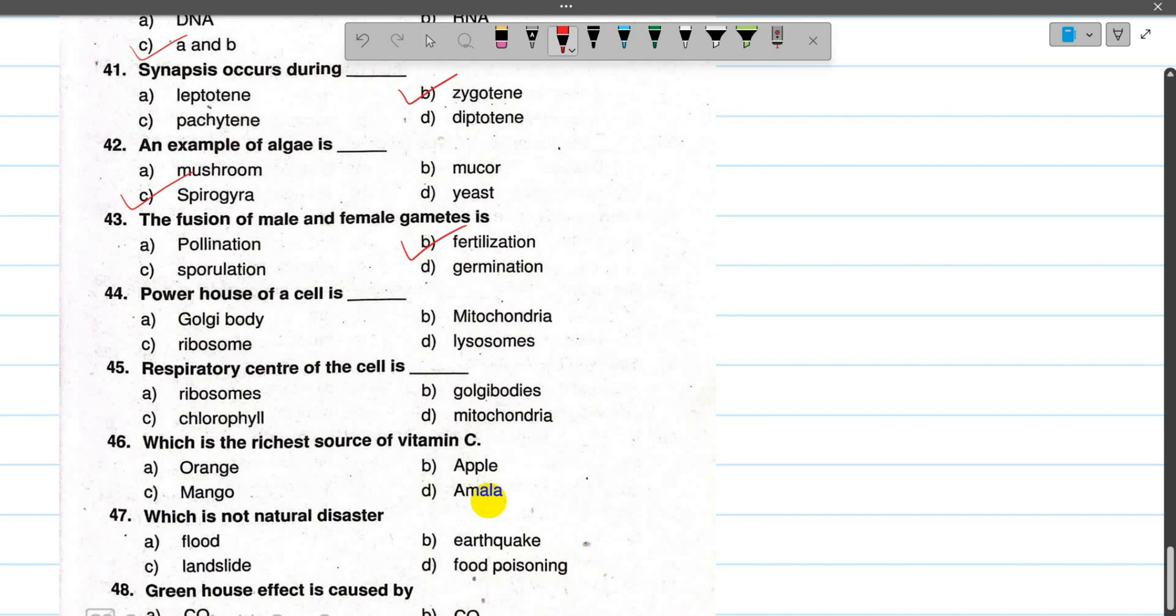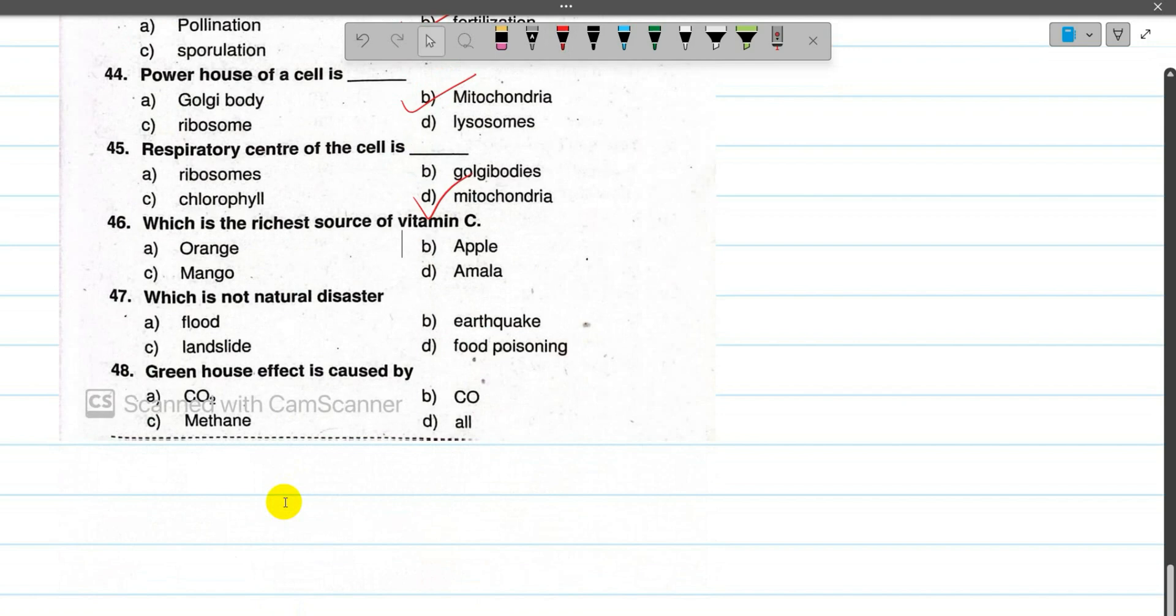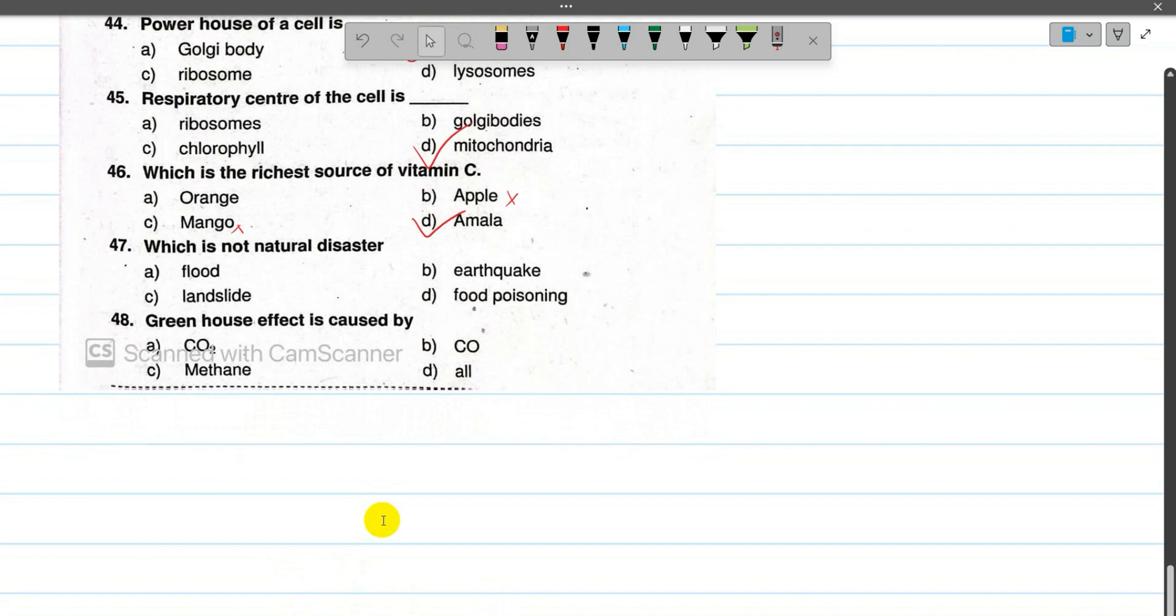Number 44: Powerhouse of the cell is mitochondria. Number 45: Respiratory center of the cell is also mitochondria. Number 46: Which is the richest source of Vitamin C? The answer is acetic acid. Number 47: Vitamin D source is sunlight. Number 48: Greenhouse effect is caused by CO2, carbon dioxide, methane, all of these. So the answer is option number D, all. So this is it for this video, bye!